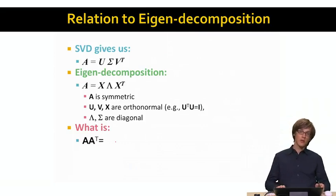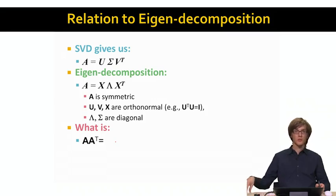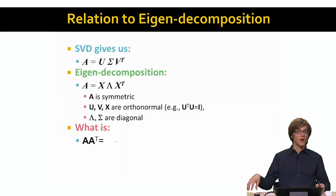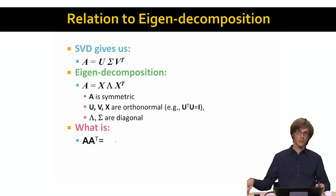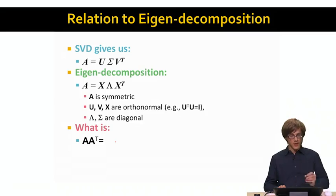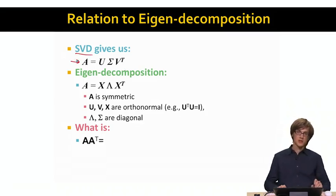Now very briefly, I want to relate singular value decomposition to another type of matrix decomposition called eigenvalue decomposition. I will tell you what is the relationship between singular value decomposition and eigendecomposition, and then we will conclude. What we know so far is that SVD represents a matrix as a product of three matrices: U, sigma, and V transpose.